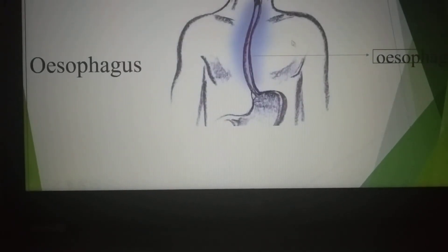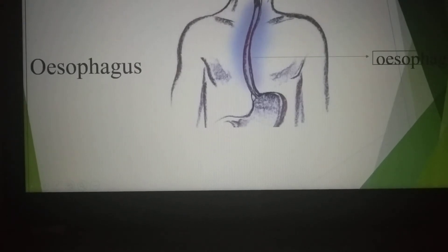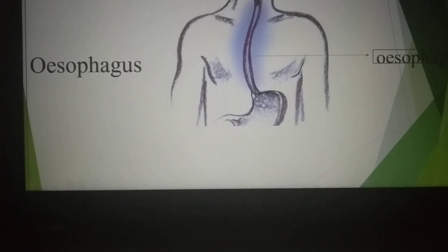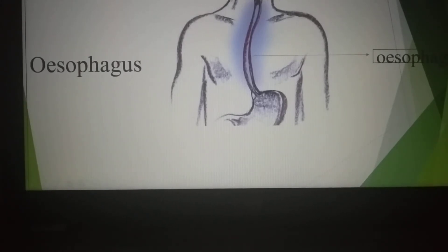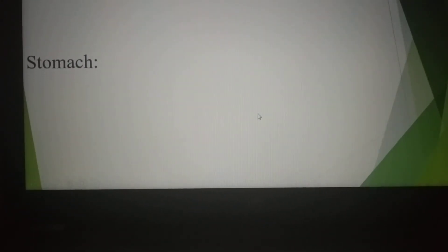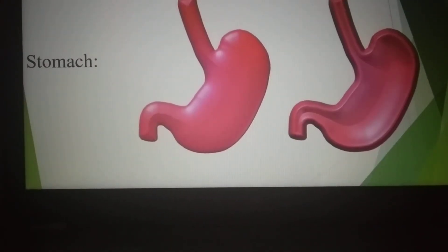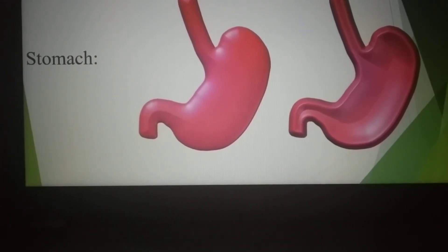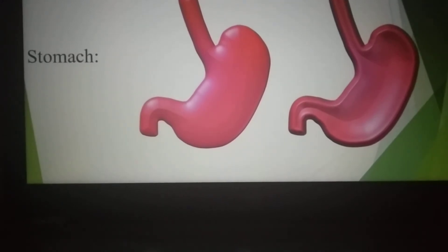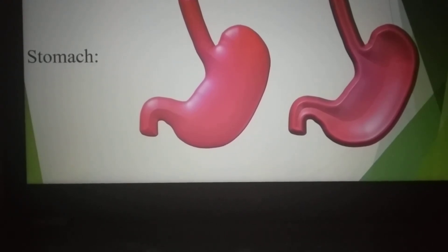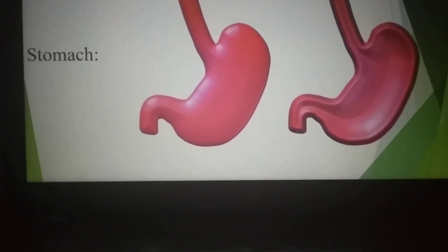Esophagus: a long tube-like structure originating from the pharynx to the stomach, about 25 cm long, is called the esophagus. Its function is to carry food from the pharynx to the stomach. Stomach: a sac-like structure with muscular walls. The inner wall carries a large number of glands which secrete gastric juice. In gastric juice, especially hydrochloric acid is present, which helps to break down food particles and convert them into chyme.